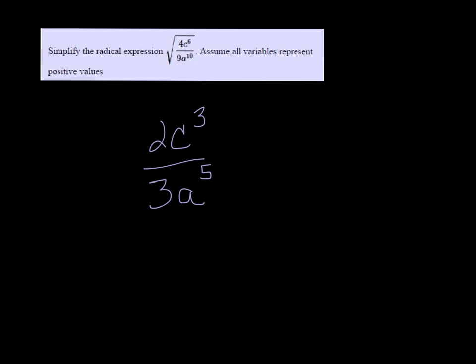When you have the square root of a variable with an exponent, you just divide the exponent by the index, which is 2 in this case. And there aren't any other ways to simplify that, so that is finished.